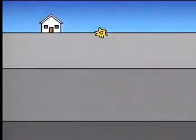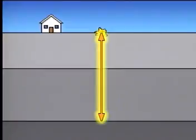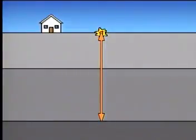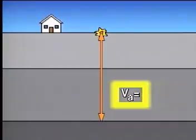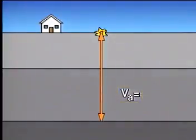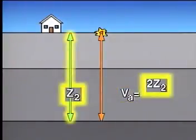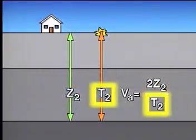Now let's assume that some of the seismic energy continues on and is reflected from the deeper interface. The average velocity to this reflector is again equal to the total distance traveled, or twice the depth, divided by the total two-way travel time.